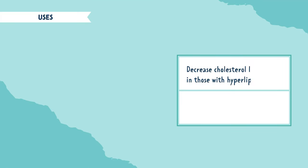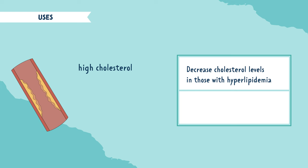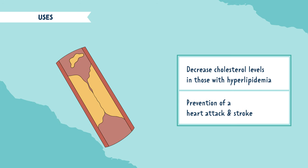We use statins to decrease cholesterol levels in those with hyperlipidemia, which is high cholesterol in the blood. This can lead to plaque buildup, eventually causing atherosclerosis. The plaque can eventually rupture, causing thrombi or a clot, and may obstruct blood flow, leading to an acute MI — a heart attack — or a stroke. So we also use statins for prevention of a heart attack and a stroke.